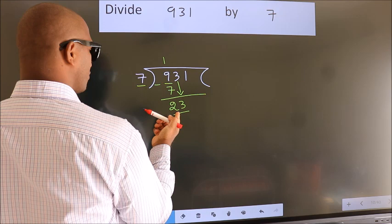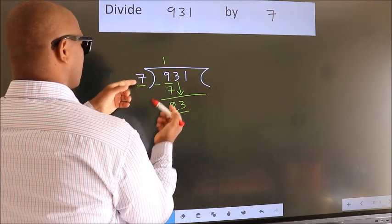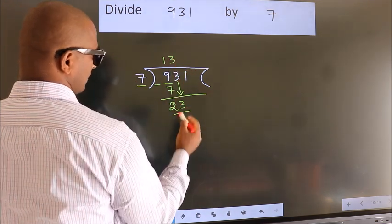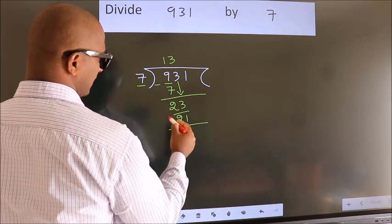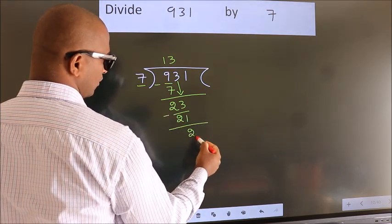A number close to 23 in 7 table is 7 threes 21. Now, we subtract. We get 2.